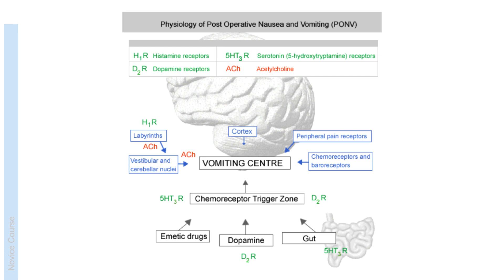There are inputs from peripheral pain receptors, which is why nausea and vomiting can be associated with very significant pain. The cortex itself is thought to be responsible for nausea and vomiting when people see something that is particularly emetogenic for them. And finally, the input that is most important for us as anaesthetists is the chemoreceptor trigger zone, which is found in the area postrema, on the floor of the fourth ventricle, and importantly lies outwith the blood-brain barrier.